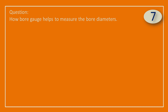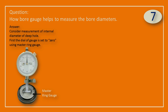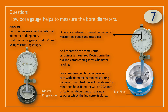Question: How does a bore gauge help to measure bore diameters? Answer: Consider the measurement of the internal diameter of a deep hole. First, the dial of the gauge is set to zero using a master ring gauge, and then with the same setup the test piece is measured. Deviation in the dial indicator reading shows the diameter reading. For example, when the bore gauge is set to zero with a 20 mm diameter master ring gauge, and the dial shows 0.4 mm with the test piece, the hole diameter will be 20.4 mm or 19.6 mm depending on the side towards which the indicator deviates.